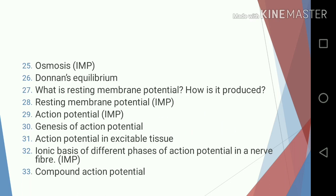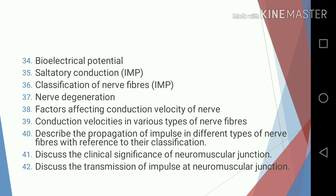Twenty-three, sodium-potassium ATPase pump; twenty-four, secondary active transport; twenty-five, osmosis; twenty-six, Donnan equilibrium; twenty-seven, what is resting membrane potential and how is it produced; twenty-eight, resting membrane potential; twenty-nine, action potential; thirty, genesis of action potential; thirty-one, action potential in excitable tissue; thirty-two, ionic bases of different phases of action potential in a nerve fiber; thirty-three, compound action potential; thirty-four, bio-electrical potential.